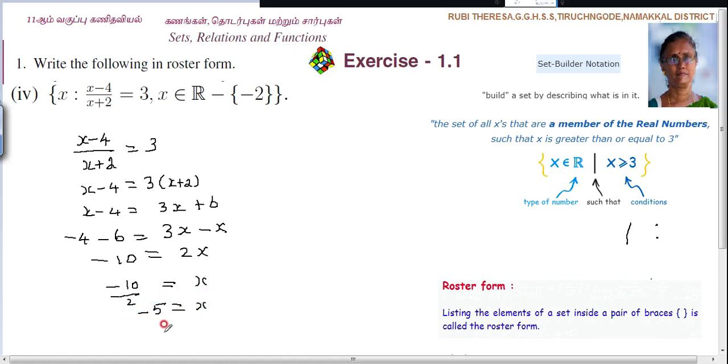And the required answer is what? Minus 5 is the answer. Suppose if you are representing this with the name of the set, then you can write D equals. Otherwise the required set is minus 5.